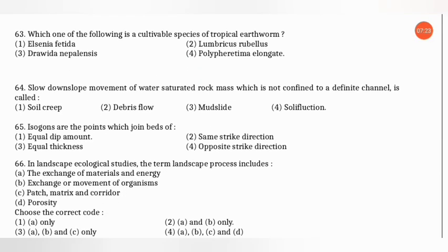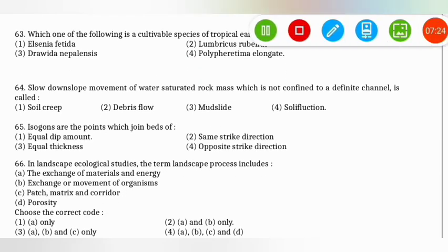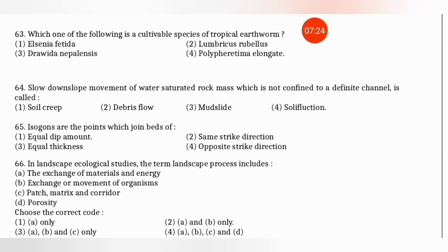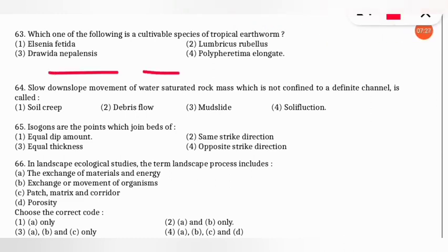The next question: slow downslope movement of water-saturated rock mass that is not confined to a definite channel is called what? Remember: slow downslope movement. The correct answer is solifluction.